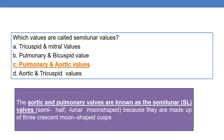Which valves are called semilunar valves? The pulmonary and aortic valves are called semilunar valves because they are made up of three crescent moon-shaped cusps. 'Semi' means half, 'lunar' means moon-shaped. Hence the term semilunar valves. Whereas the bicuspid valve is composed of two cusps and the tricuspid valve is composed of three cusps.